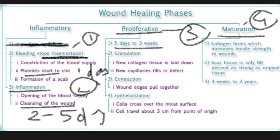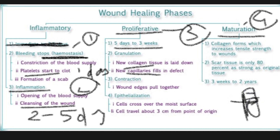The third phase is the proliferative phase, which occurs from five days to three weeks. When a cut occurs, new collagen starts to form and new capillaries develop to restore normal blood circulation. As new collagen forms, the wound edges come together through contraction. As the wound closes and the skin begins to dry, newly generated cells migrate to the area to keep it moist.